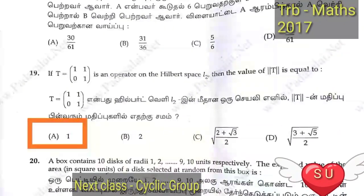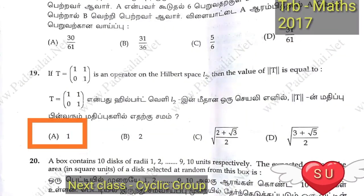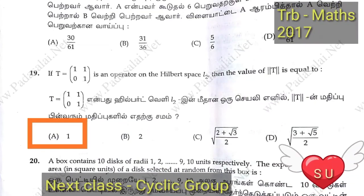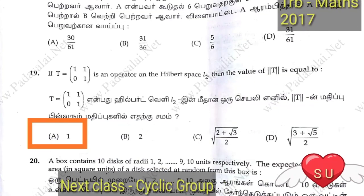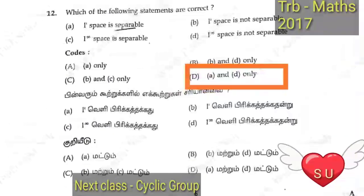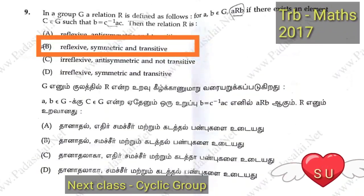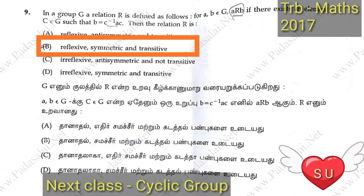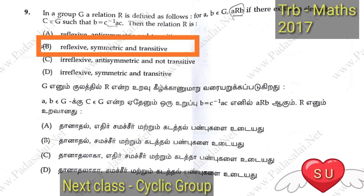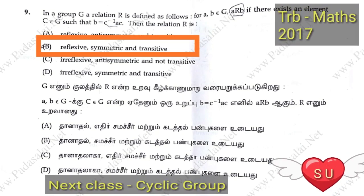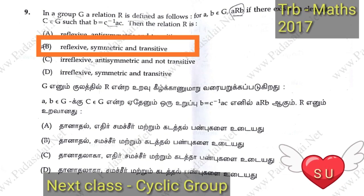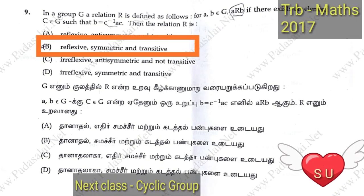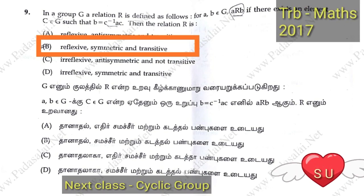For cyclic group problems, there are a maximum of around 10 problems. If you know these 10 problems, you can solve them. The logic and theorems behind these problems exist and we can cover them in the next class. The next class will focus on cyclic groups, with statements and example properties followed by problems.